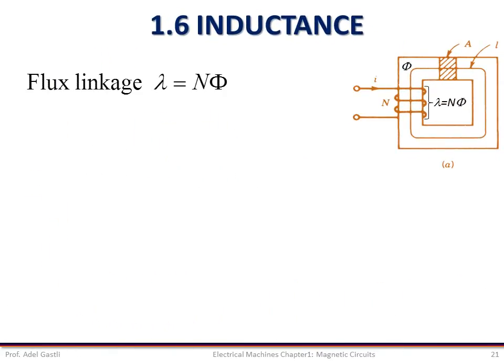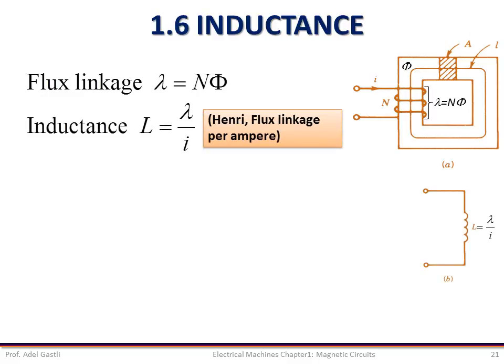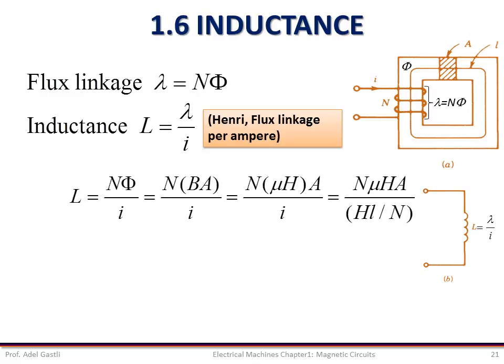We define the flux linkage of a given N turns coil as the product of the magnetic flux by the number of turns in the coil. The inductance is therefore defined as the ratio of the flux linkage over the current in the coil. Its unit is Henry. Now, using these two equations and the equation of the flux and flux density, we can write the expression of the inductance as shown in this equation. Note that the last term in this equation is obtained by considering Ampere's law.